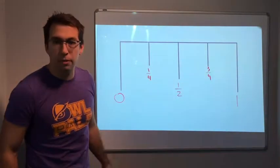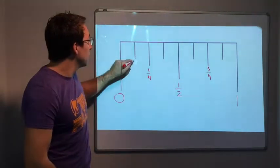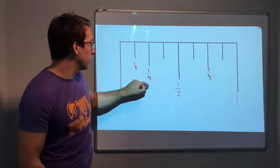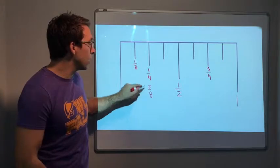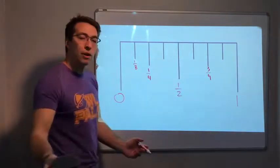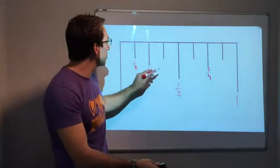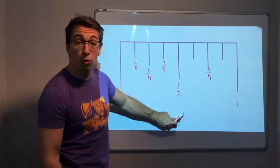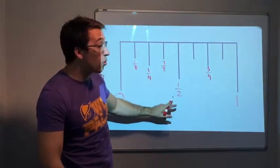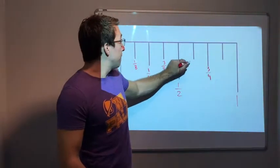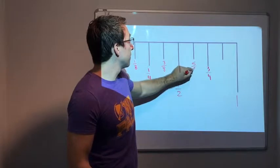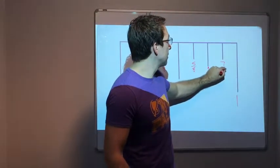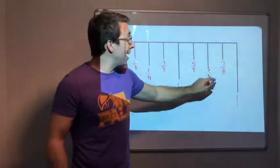All the way to one inch you stop by quarters. Now you have eighths: one out of eight. Two out of eight is one quarter. This is how fractions work — this is how a tape measure works. Three eighths, four eighths — four out of eight is one half. Five eighths, six eighths — that's three quarters. Then seven eighths. This is how a tape measure works.